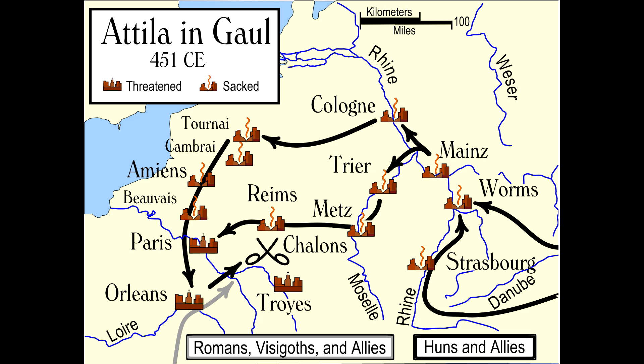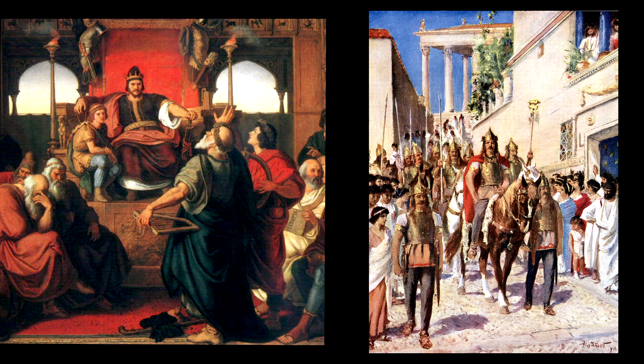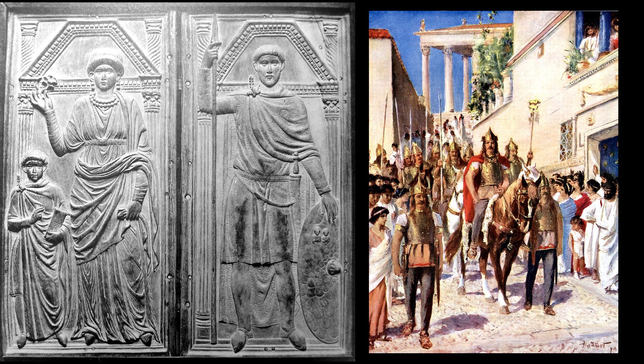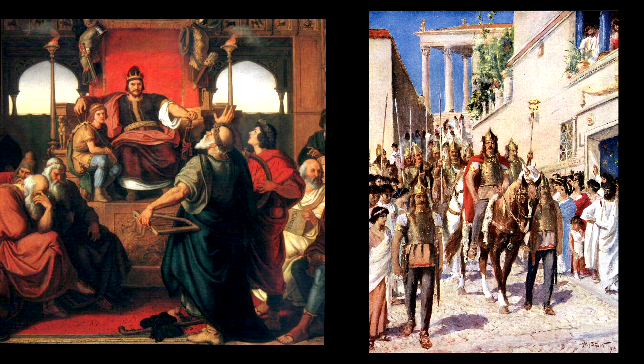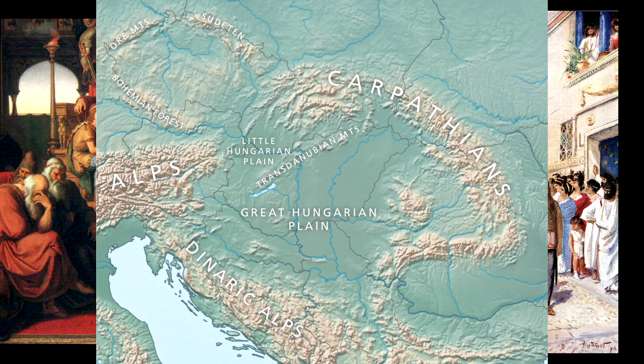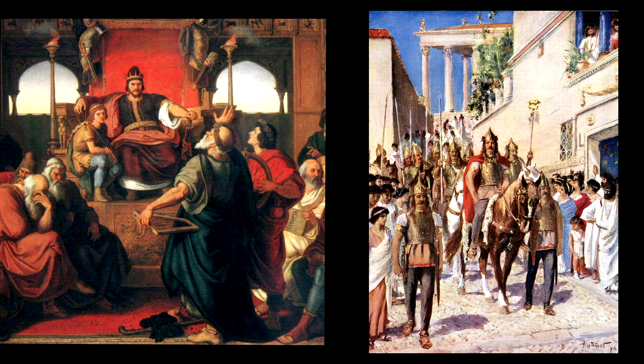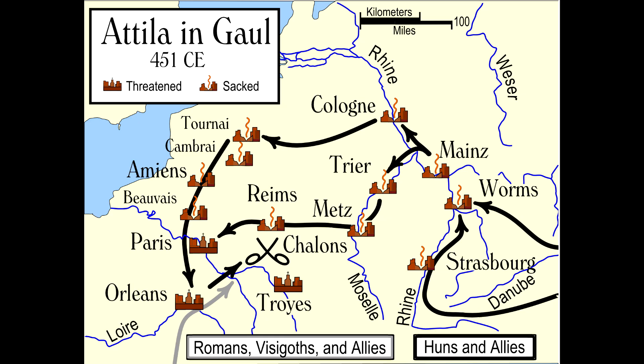A Western Roman general known as Flavius Stilicho in the case of Alaric, and Flavius Aetius in the case of Attila, confronts each of them. The person on the altar image is attributed to both Flavius Stilicho and Flavius Aetius, possibly because they are the same person. In both instances, the invaders suffered a questionable defeat and withdrew to the Carpathian Basin. I believe it's crucial to point out that although officially unrelated to Alaric, nearly the same events occurred 44 years before Attila's campaign in Western Europe.